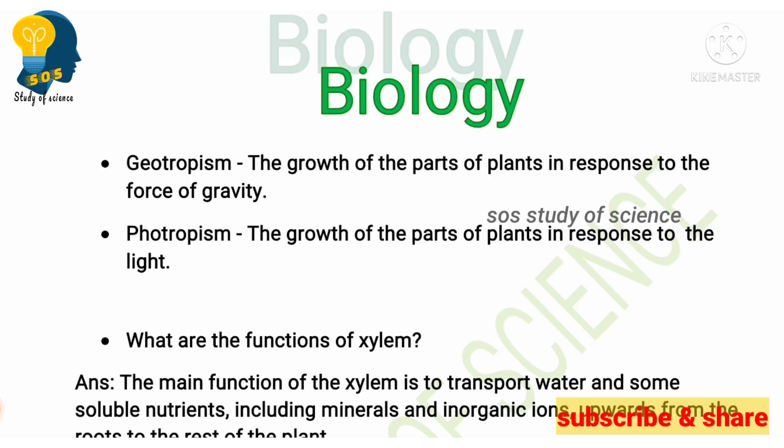First and foremost, we need to learn about tropic movements. The first one is geotropism. What is meant by geotropism? The growth of parts of a plant in response to the force of gravity — this we call geotropism. In fact, all four tropic movements are very important. In this video, I'm discussing the most expected tropic movements. Geotropism and phototropism are very frequently asked in exams — students must expect questions on these.